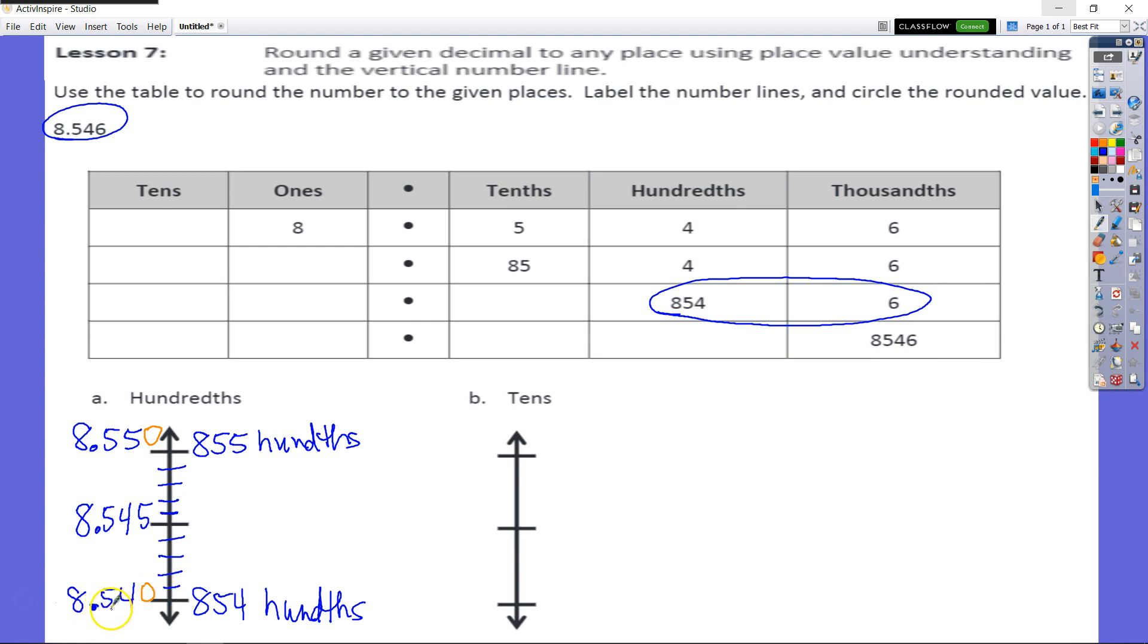So that would be eight and five hundred forty thousandths, which is equal to eight and fifty four hundredths. This would be eight point five four one, eight point five four two, eight point five four three, eight point five four four, eight point five four five, which is my midpoint. And then I would have my actual number right here. One tick mark above my midpoint. This would be my number that we started with, which is eight and five hundred forty six thousandths.